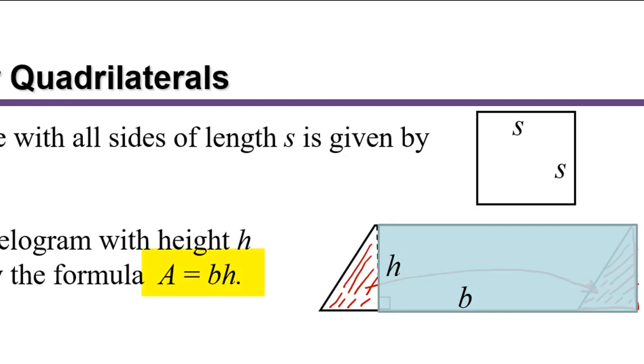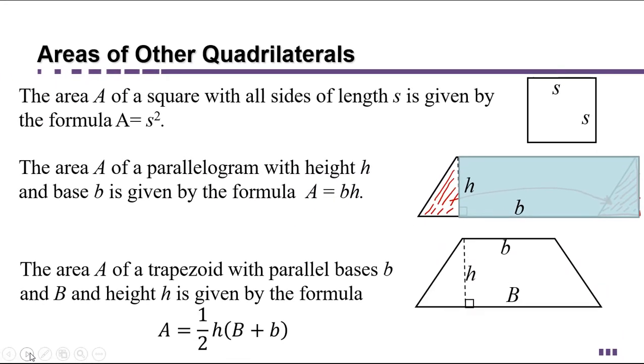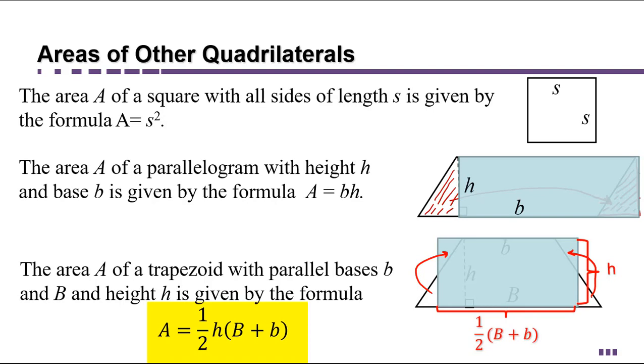Now consider a trapezoid with parallel bases of length little b and capital B, and a height h, drawn the same way that we drew the height of the parallelogram. Instead of cutting off the triangle this time, I'm going to imagine drawing a rectangle which has the same area as the trapezoid, by using the average of the two bases to form the base of the rectangle and keeping the height the same. You see how the little rectangles could be moved to fill in the gaps? So this rectangle has the same area as the original trapezoid. It has a length of one-half of b plus B and a height of h. If we multiply those together, we get the area of a trapezoid. Area equals one-half the height times the base plus the base.